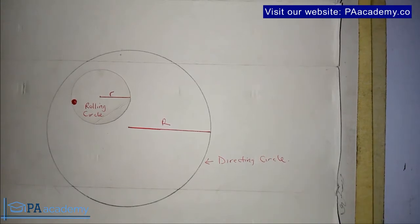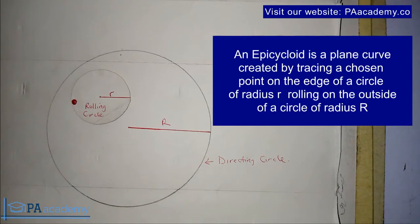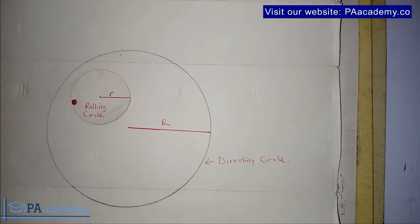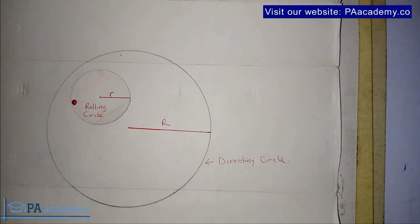To start with, I'll begin with the definition of epicycloid. What do we mean by an epicycloid? An epicycloid is a plane curve created by tracing a chosen point on the edge of a circle of radius r, rolling on the outside of a circle of radius R. You can see we have two radii, and as I mentioned in my video on how to draw epicycloid or hypocycloid, two things are required: the radius of the rolling circle and the radius of the directing circle.